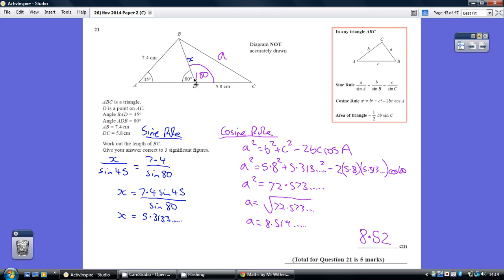So to start off with, we're trying to work out this length BD, which I'm going to call X. Now looking at this non-right angle triangle ABD, we do know a pair, as much as we know an angle and its opposite side, 80 and 7.4. So we can use the sine rule.